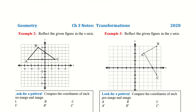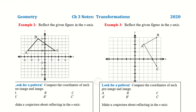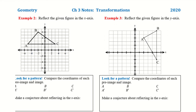Reflect the given figure over the x-axis for example two. If we reflect it over the x-axis, that's right here. We want to reflect this image over the x-axis, going point by point. Starting with A — A is two points away from my axis. So if I want to reflect that, I also want it two points away the other direction. That will be my A prime.